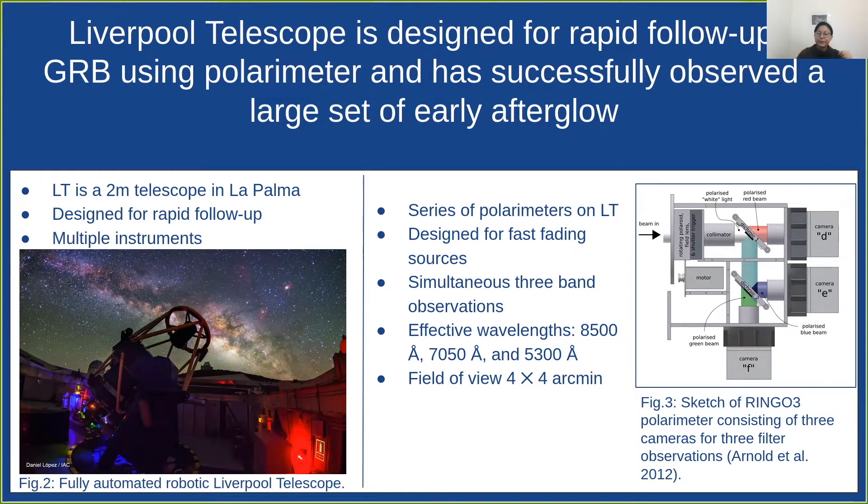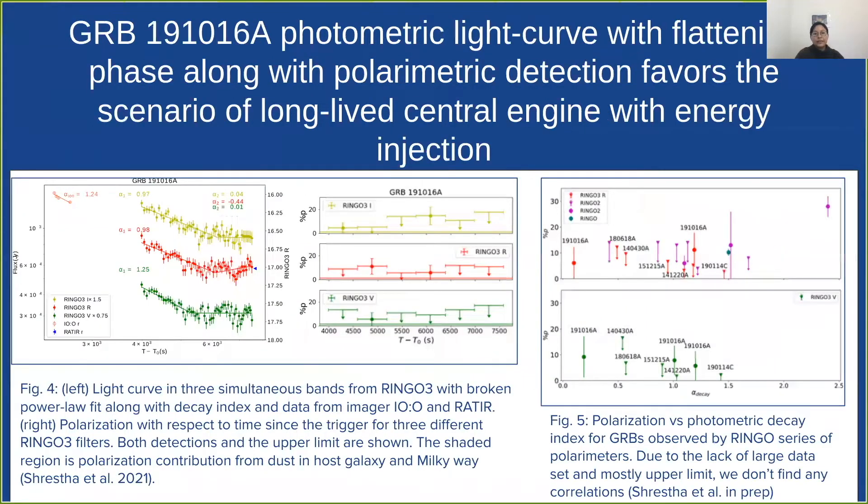I talk about one of the very interesting results we got here recently, which is for GRB 191016A, where with the addition of combination of light curve and polarimetric data, we were able to show that this GRB has a long lived central engine with energy injection pretty late in time.